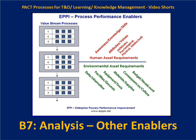In my model for EPI — which is covered in a couple of other videos in this video series — EPI stands for enterprise process performance improvement. We can begin to look at the process performance enablers. You'll see at the top, under human asset requirements, that awareness, knowledge and skills are covered — that's what the PAC processes and ISD set of methodologies covers.